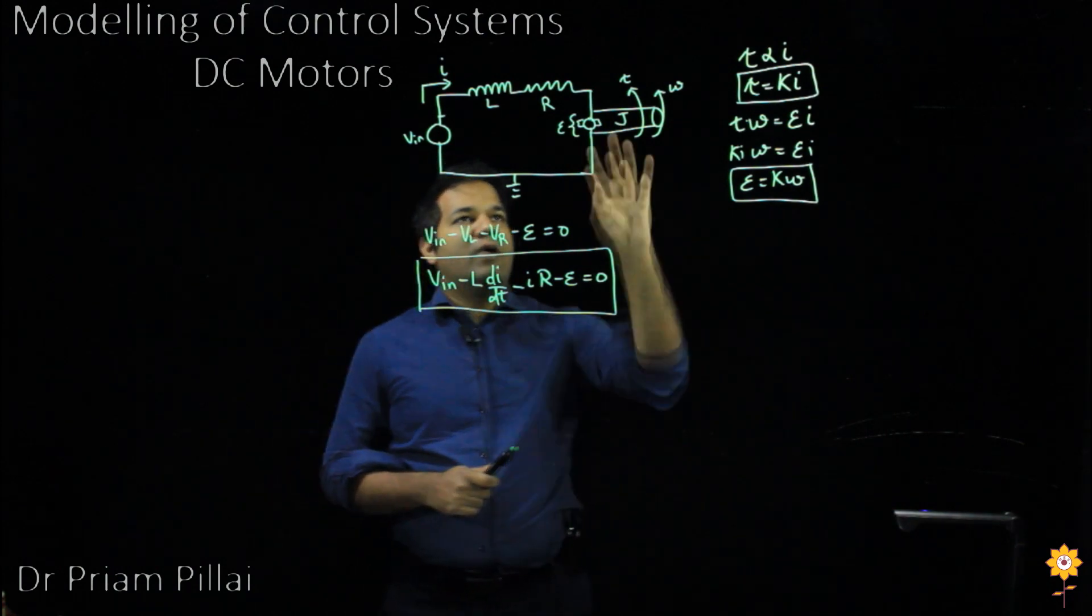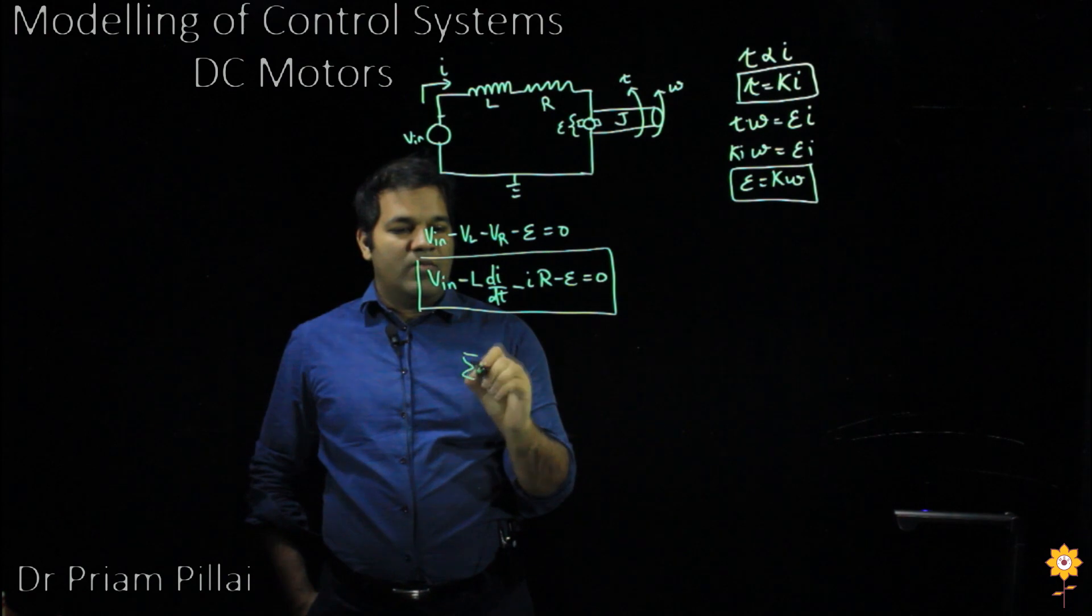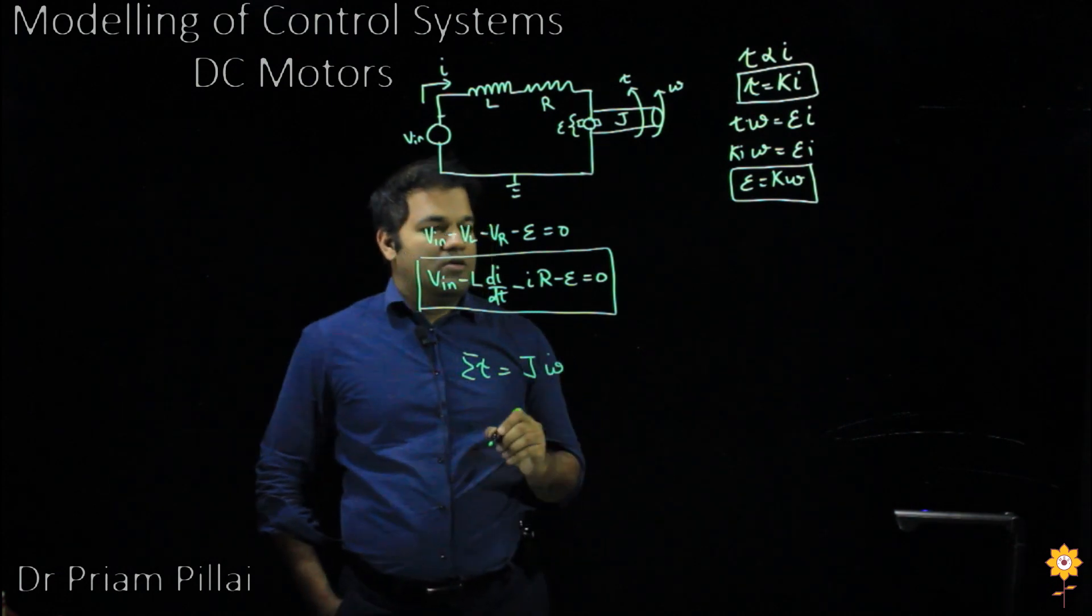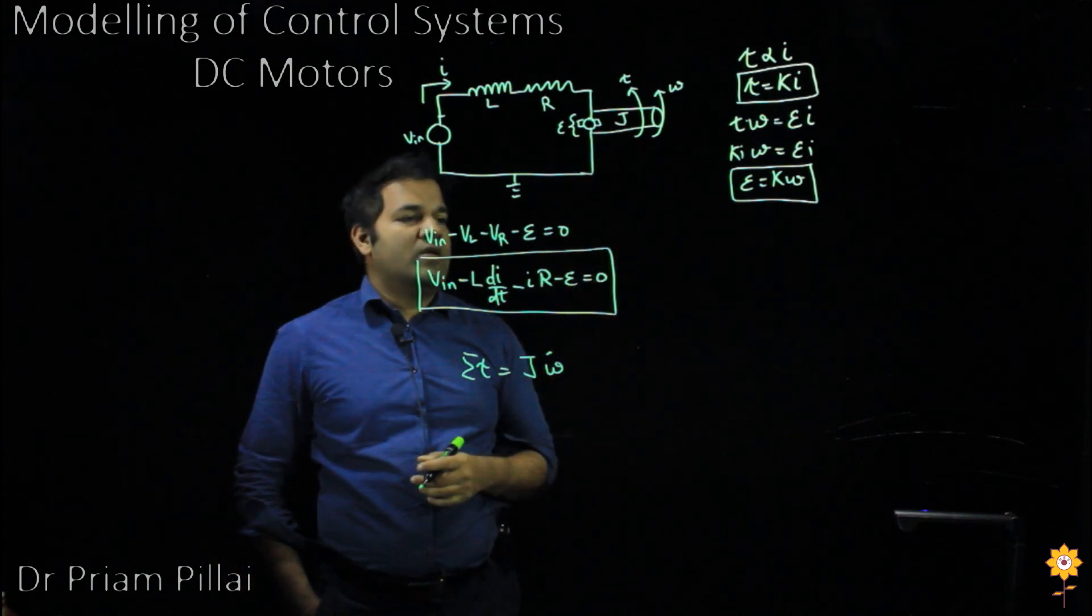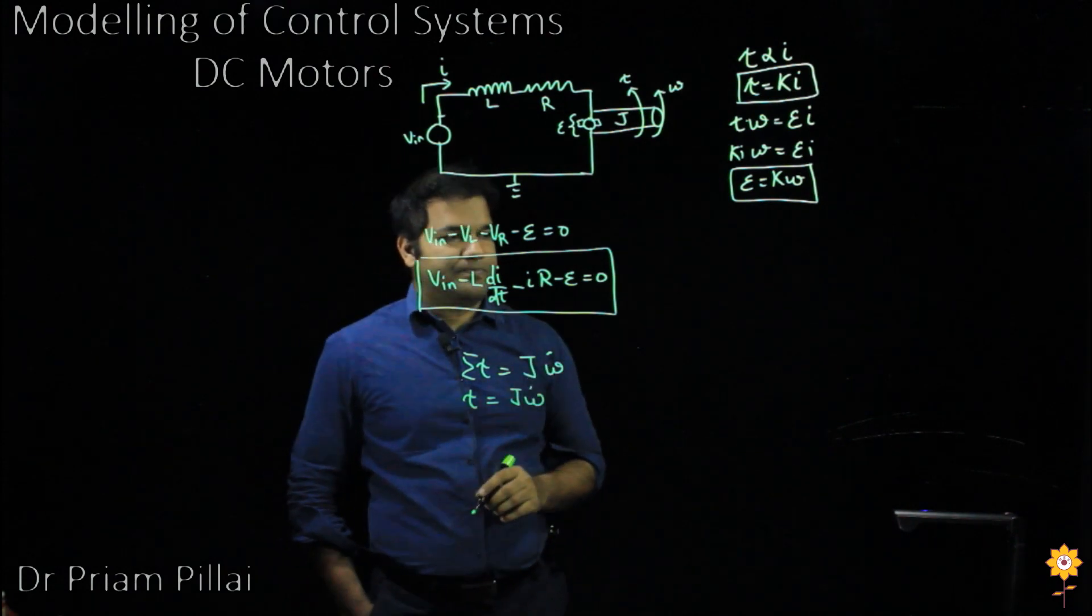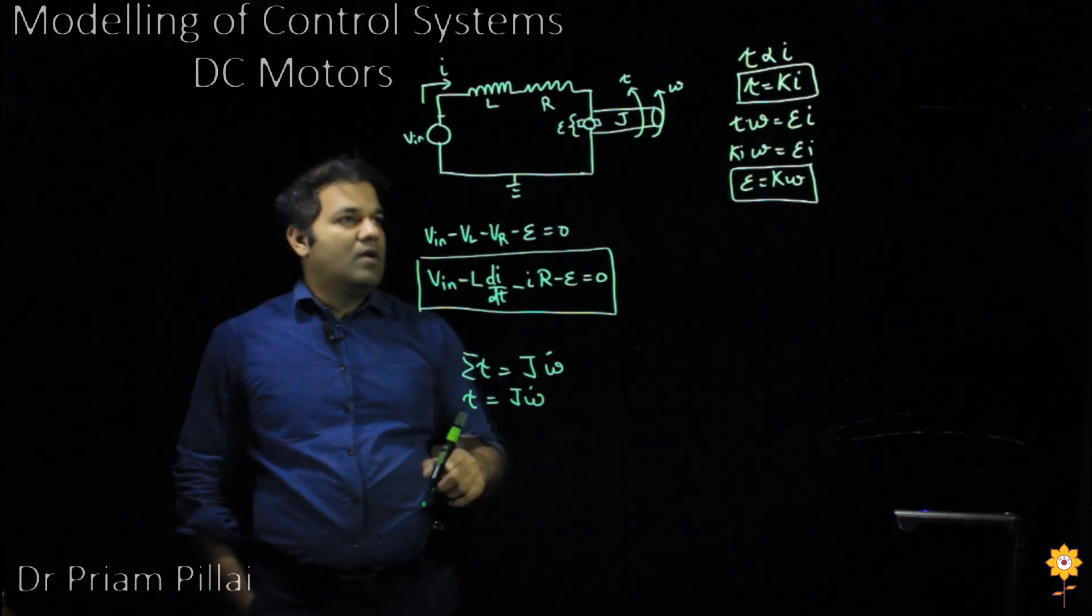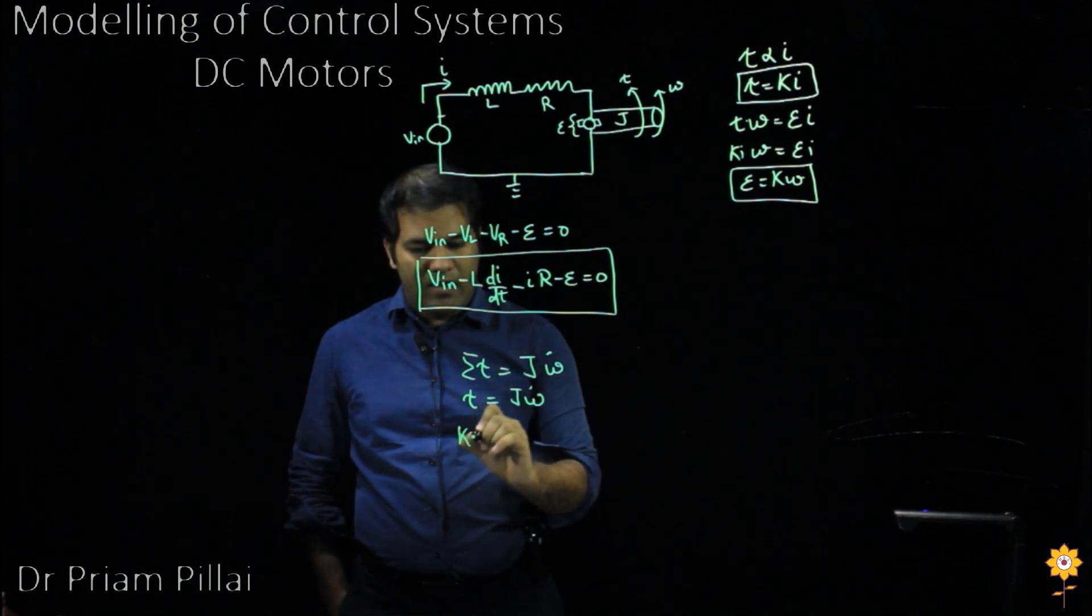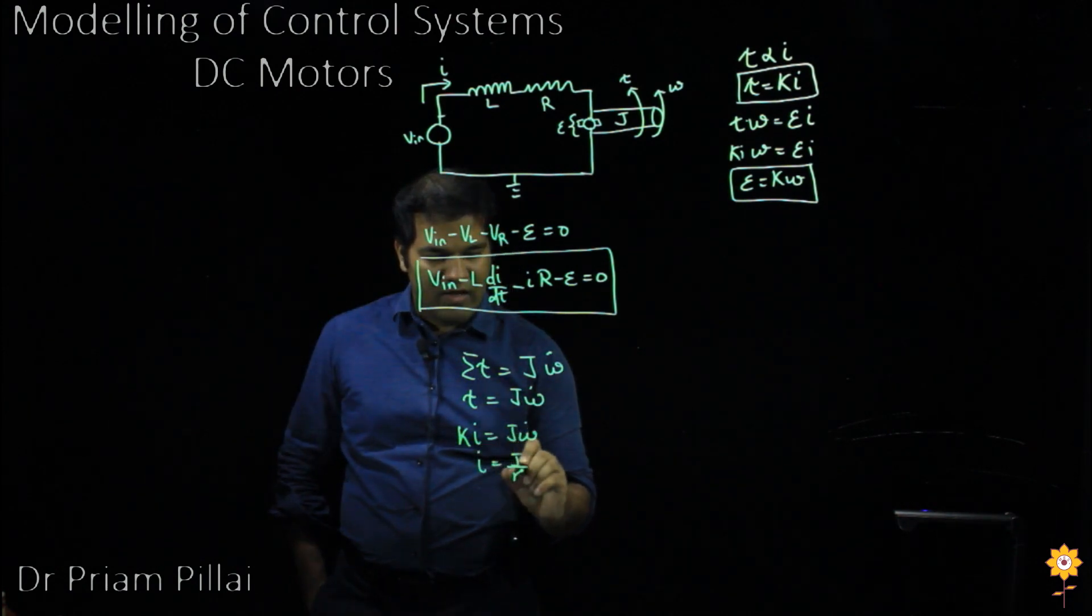Another piece would be to look at the rotation of that shaft. If we apply conservation of angular momentum to that shaft, the sum of all the torques acting on that shaft would equal J times omega dot, where omega is the angular velocity. In this case, we'll assume that there are no frictional torques or any other torques acting on this. So just the torque from the motor would equal J times omega dot. Combining this and the expression for the torque, we get Ki equals J omega dot, so I would equal J over K omega dot.